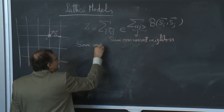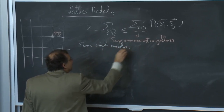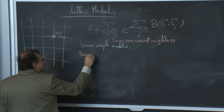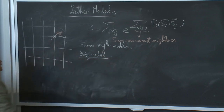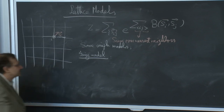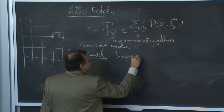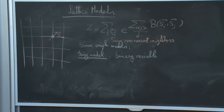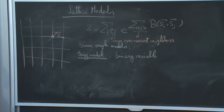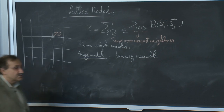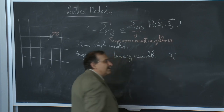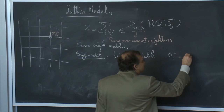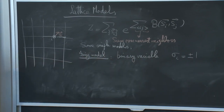Let's look at some simple versions of this construction. The simplest one is the Ising model, where the variable at each site has two possibilities — it's a binary variable. In the context of a binary alloy, it could be atom A or atom B occupying a particular site. For a surface where you are absorbing particles, a site could be occupied or empty. We can indicate those by plus or minus 1 as the two possible values.